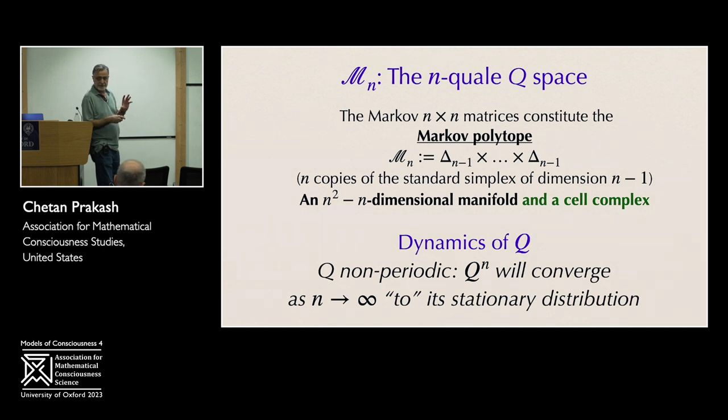And so the dynamics of Q are such that, as I just mentioned, for non-periodic Q, Q to the N will converge, as N goes to infinity, to a matrix whose rows are all its stationary distribution. So it converges to a rank one matrix, which has a stationary distribution. For those who are not that familiar with this kind of mathematics, I'll just say it converges to something. And what it converges to is something that doesn't change anymore.